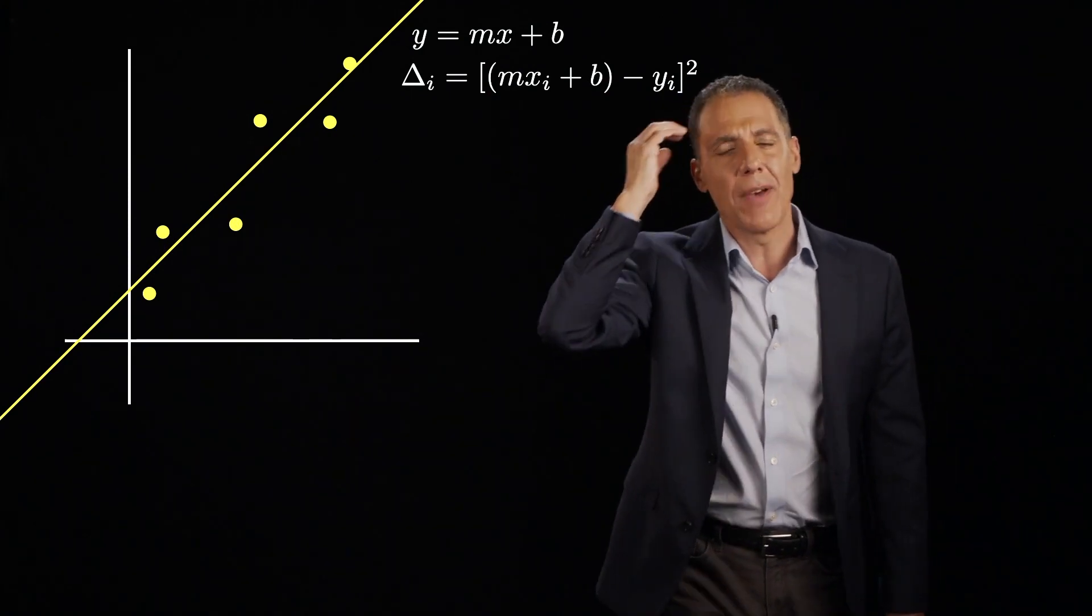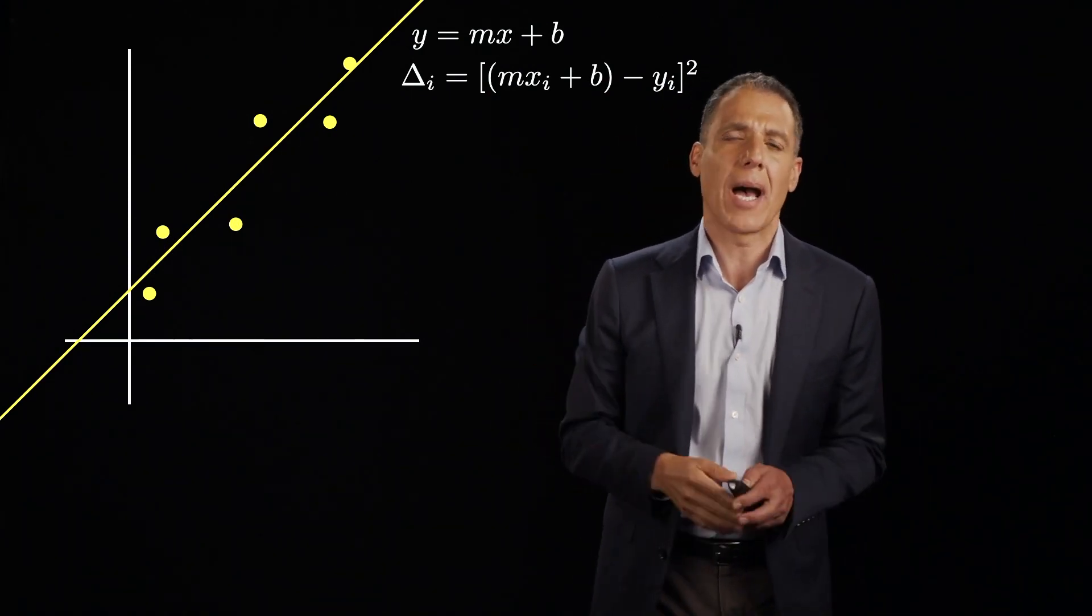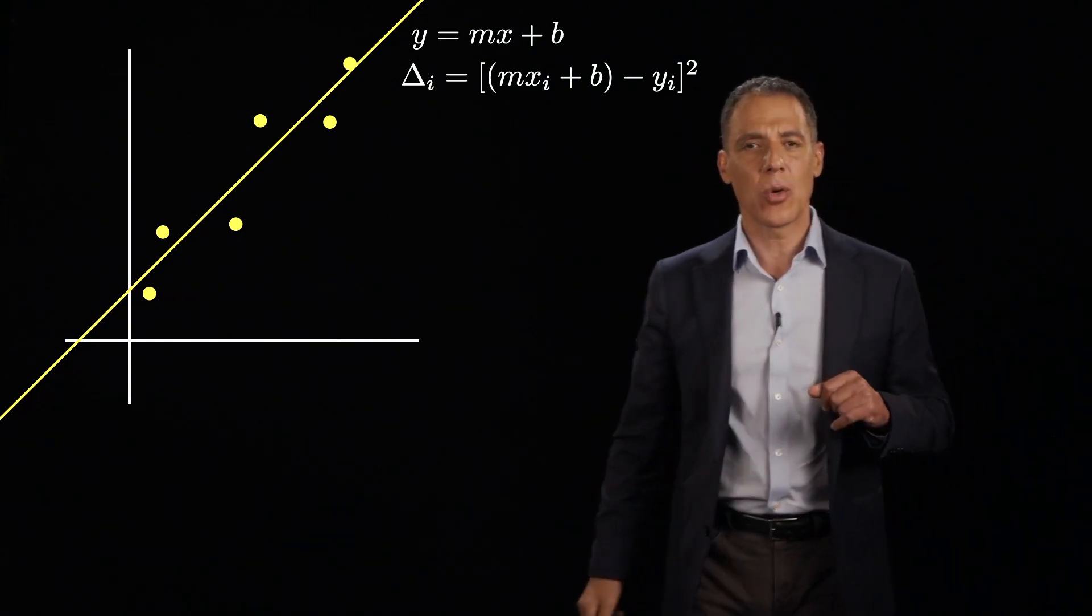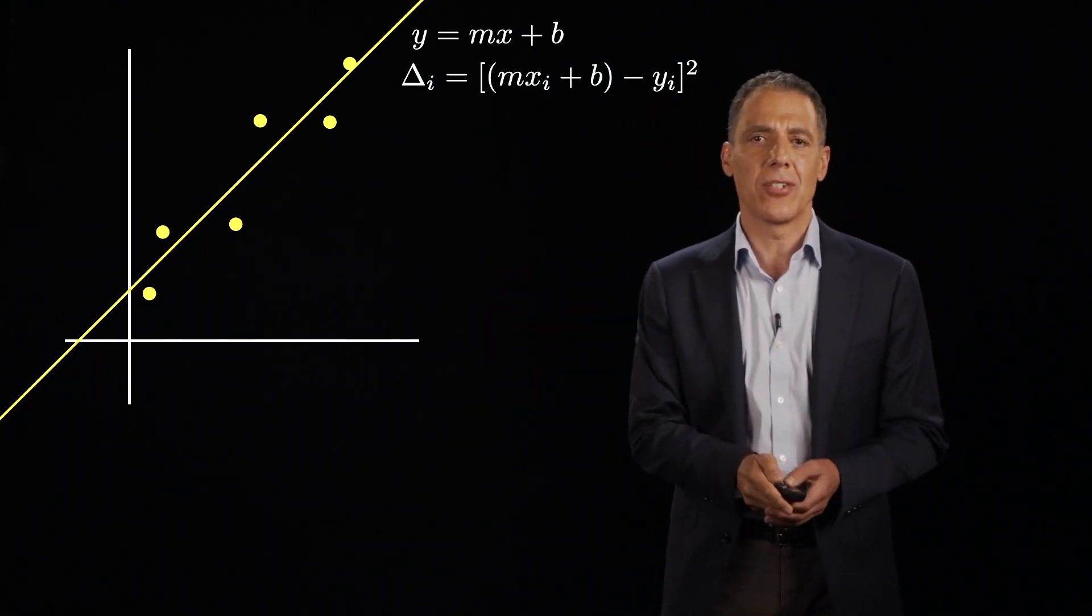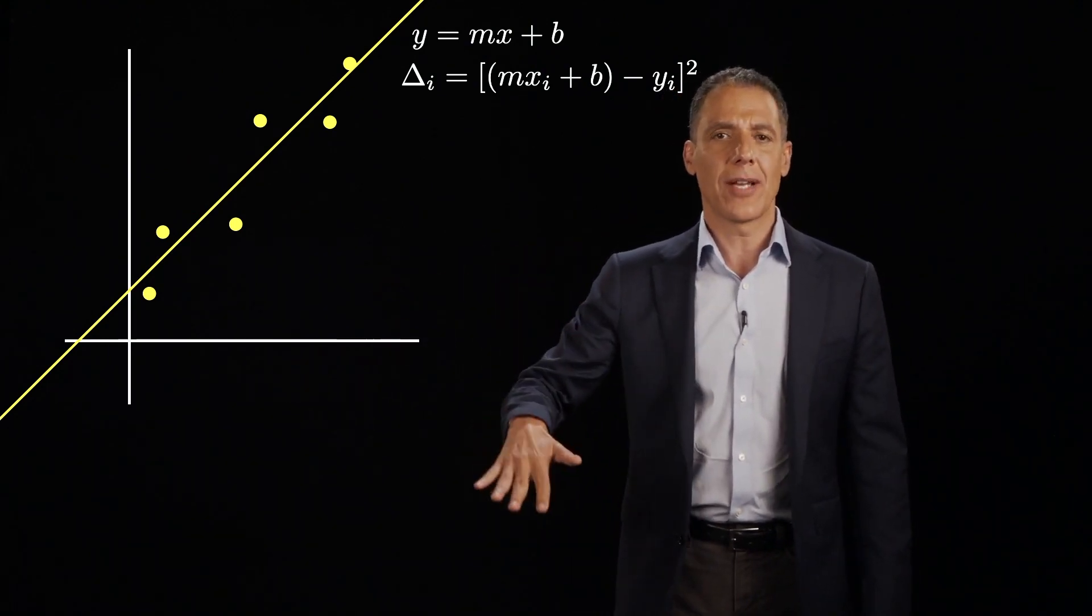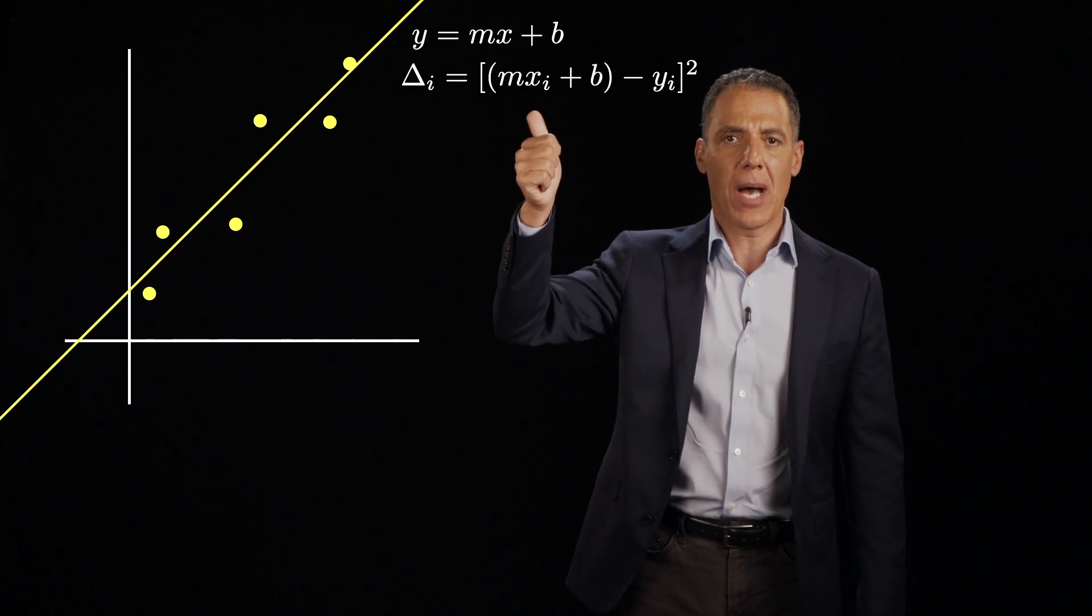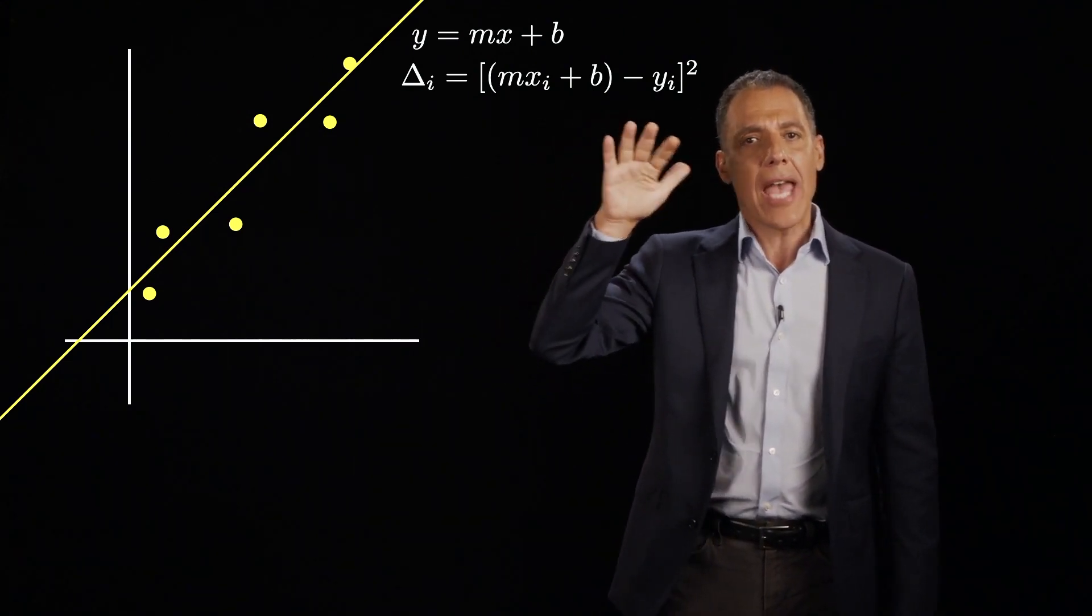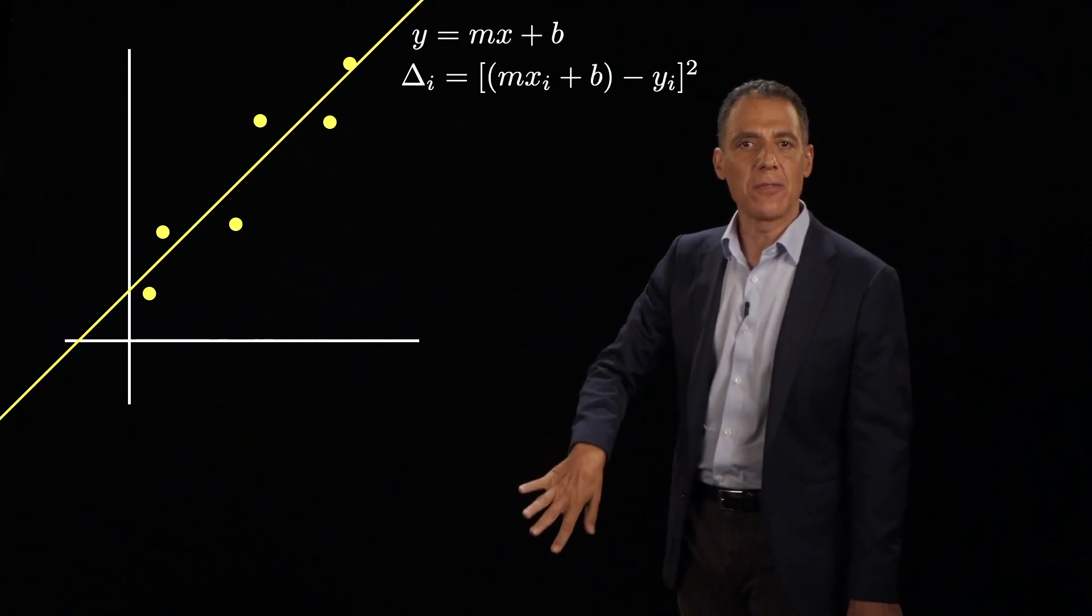Now, why didn't I take the absolute value? That would have been, in some ways, the more obvious thing to do. And now we get into that relationship that I just told you about. Remember, every optimization, every supervised learning and unsupervised learning has three parts. What's the model? What's the objective? And how do you minimize it?